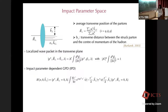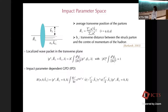Now we can take the same operator used in defining the GPD, but change the matrix element: instead of taking a state with definite momentum, we take a state localized in the transverse position. Here we have the same bilocal operator evaluated at two different points. If you recall the definition of the GPD, instead of zero, now we have the transverse position — the operator is the same, but the initial and final states are localized in transverse position.